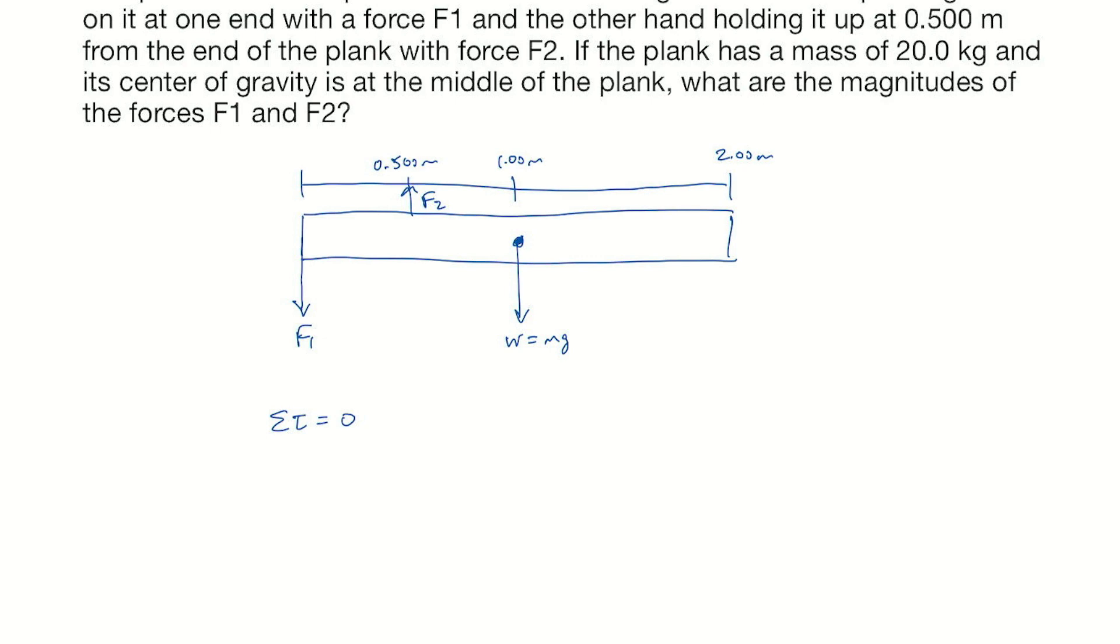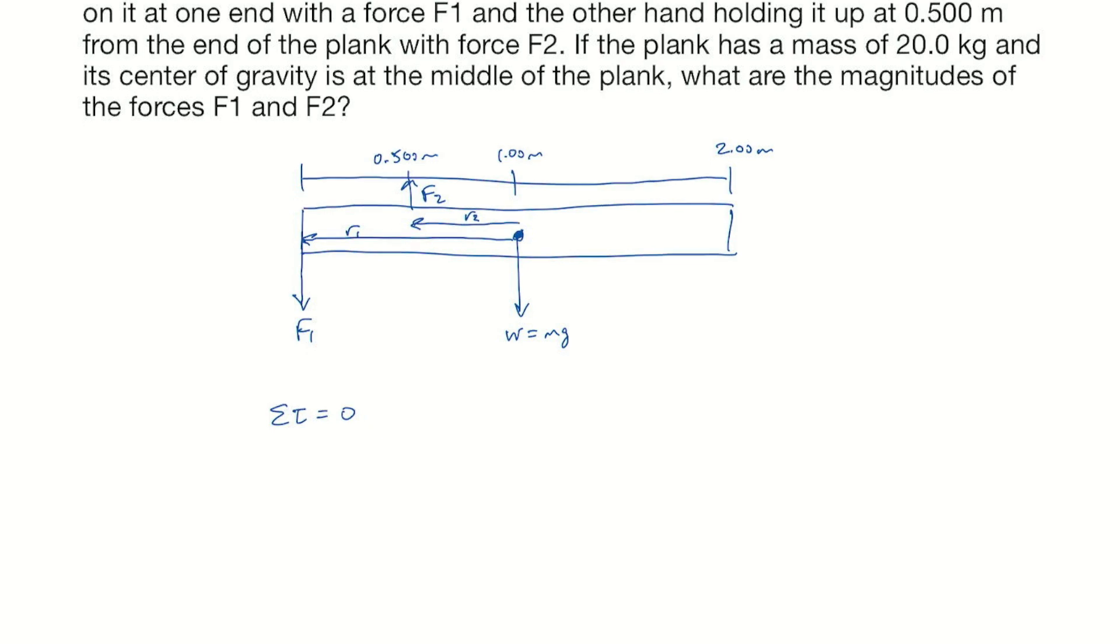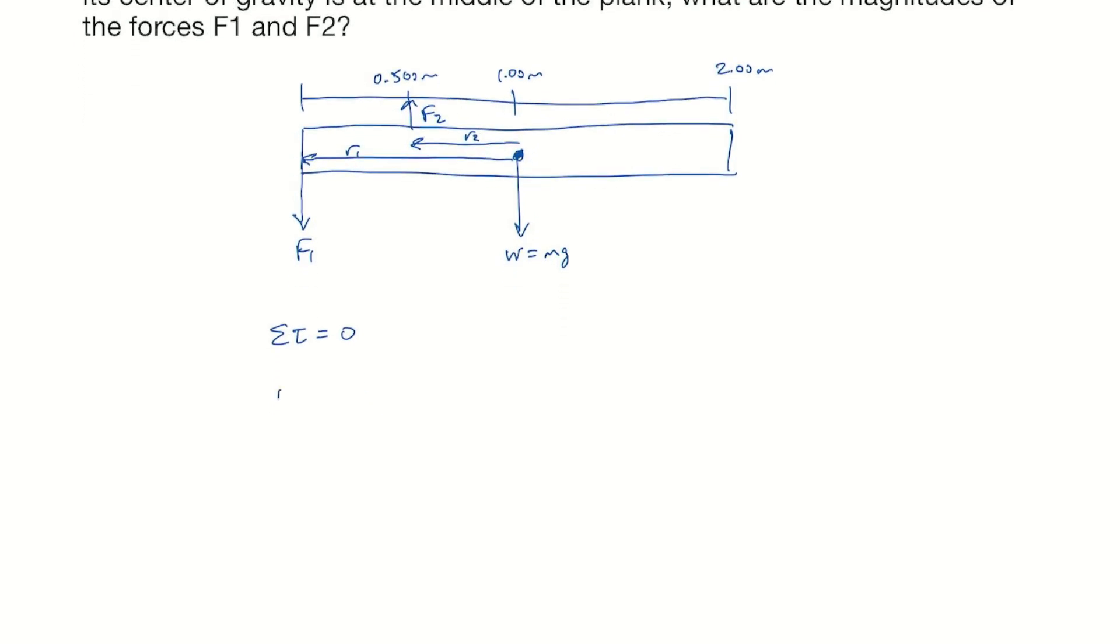We can draw from the axis of rotation to where the force is applied. This is our R1. And we'll draw another one, R2 for F2. And so what we have is R1, F1, sine 90. That's the one making the counterclockwise rotation, so that's positive. Then we're going to subtract R2, F2, sine 90. Because F2 is the one making clockwise rotation.